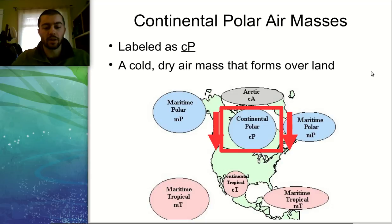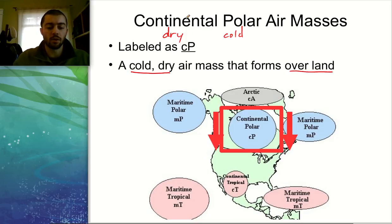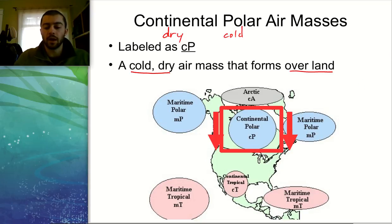Our last type is continental polar: continental means dry, polar means cold — so this is a cold, dry air mass. It's labeled lowercase c, uppercase P, following the same pattern. It's a cold, dry air mass formed over land. In the United States, we'd see this type of air mass coming down from Canada and the Arctic Circle, bringing cold, dry air into the United States. Thanks for watching this video on air masses, and I'll see you in the next one.